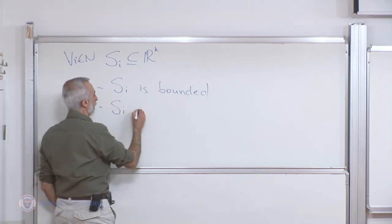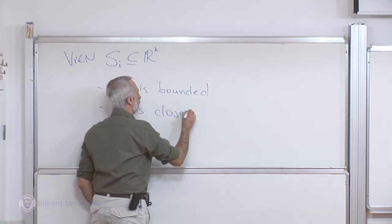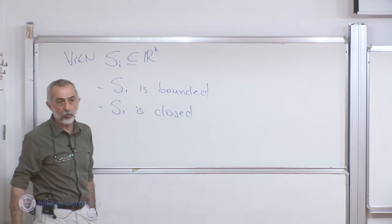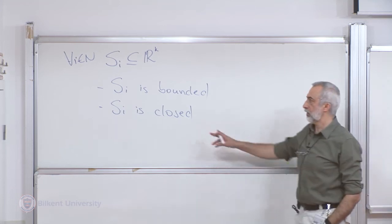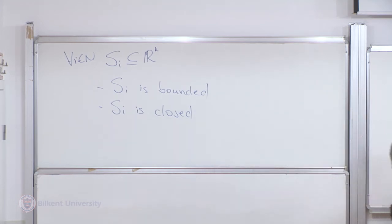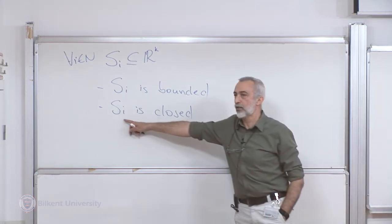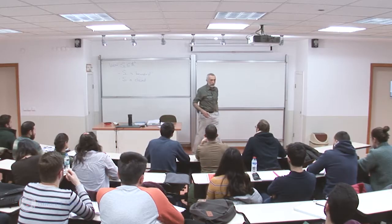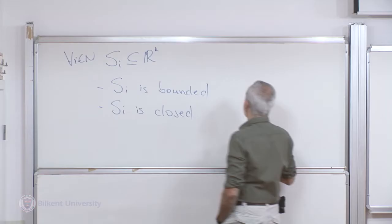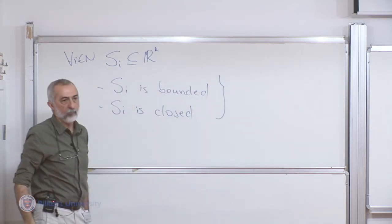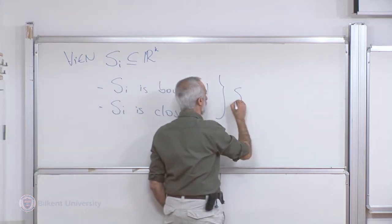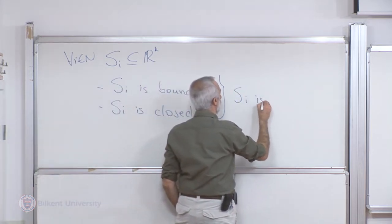We also had to have S_i closed, because if it was not closed, we could easily have cases with nice best responses that did not intersect in S_i. Essentially, the example we had was they intersected at the boundary of S_i, but the boundary was not an element of S_i. Putting those two together, because we're working with Euclidean spaces with the usual metric and usual topology, this implied S_i is compact.